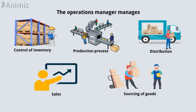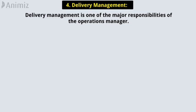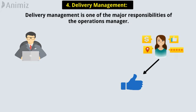I have discussed product planning, forecasting, and supply chain management in separate videos — check those videos in the I button and description. 4. Delivery Management. Delivery management is one of the major responsibilities of the operations manager. The manager makes sure the goods are delivered to the consumer from time to time. They should follow up with consumers to ensure that the products delivered are what they required and meet their needs.